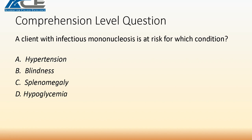Moving up the ladder to a comprehension-level question, not only do you have to know what splenomegaly is, you have to know when you might see that condition. For example: 'A client with infectious mononucleosis is at risk for which condition — hypertension, blindness, splenomegaly, or hypoglycemia?' Knowing there's an infection — the Epstein-Barr virus — and that splenomegaly can occur with infectious mononucleosis, C is the correct answer.